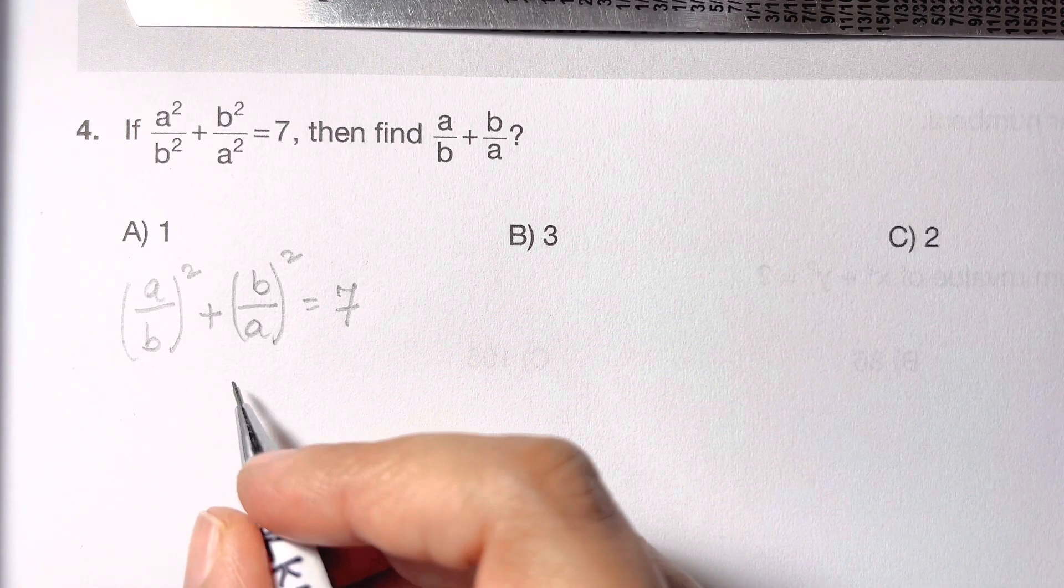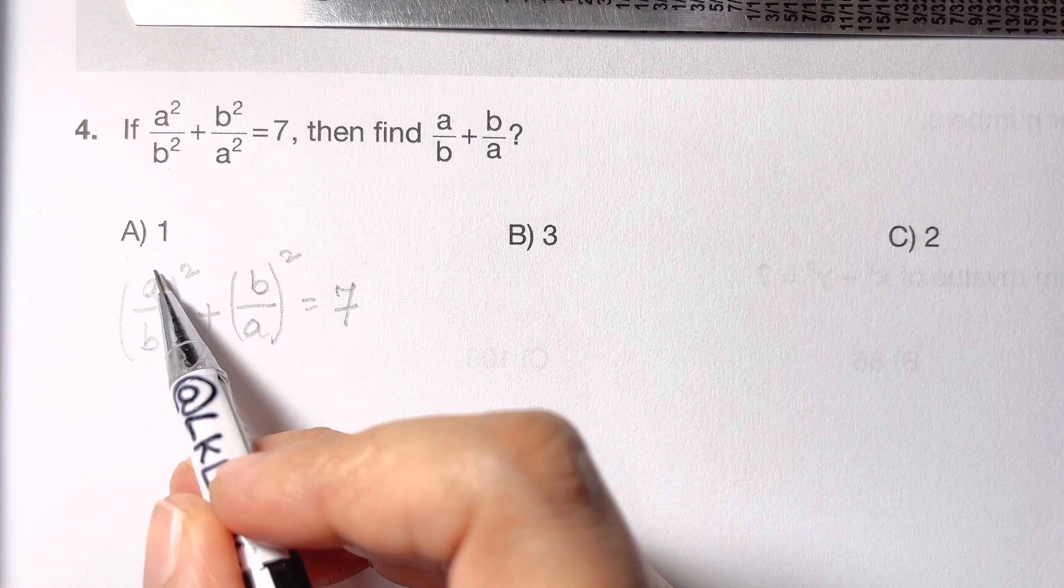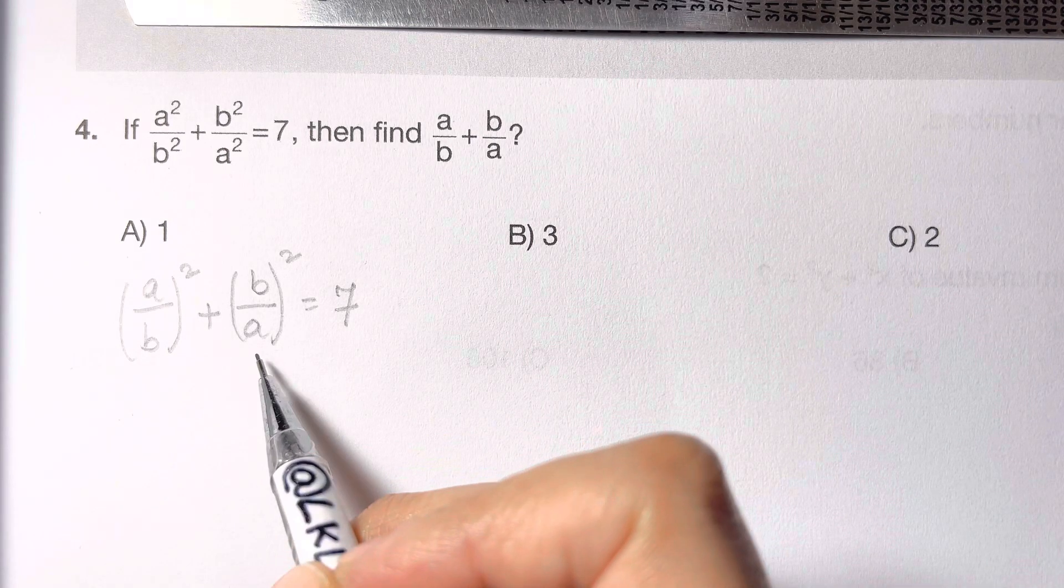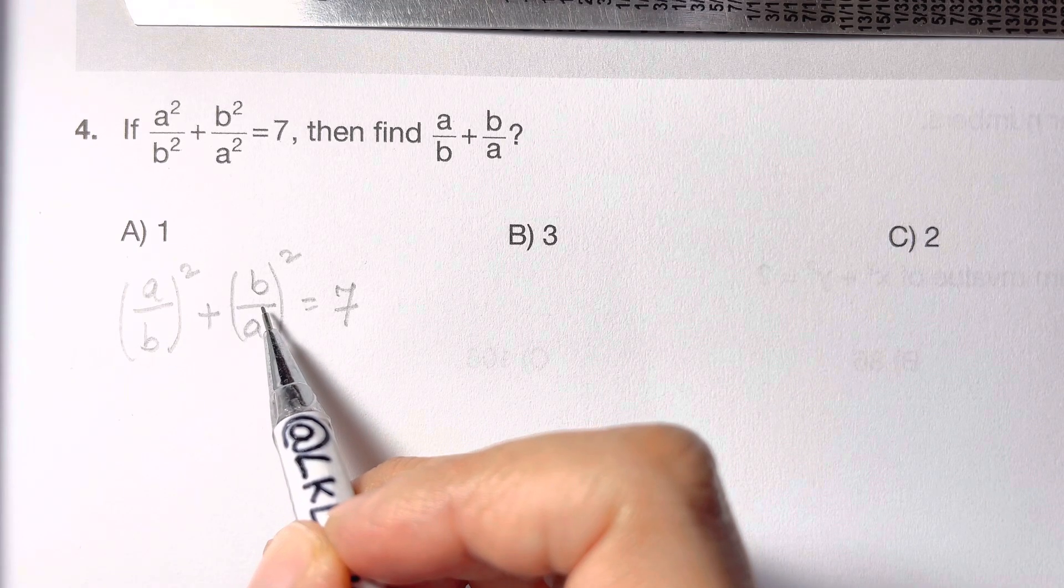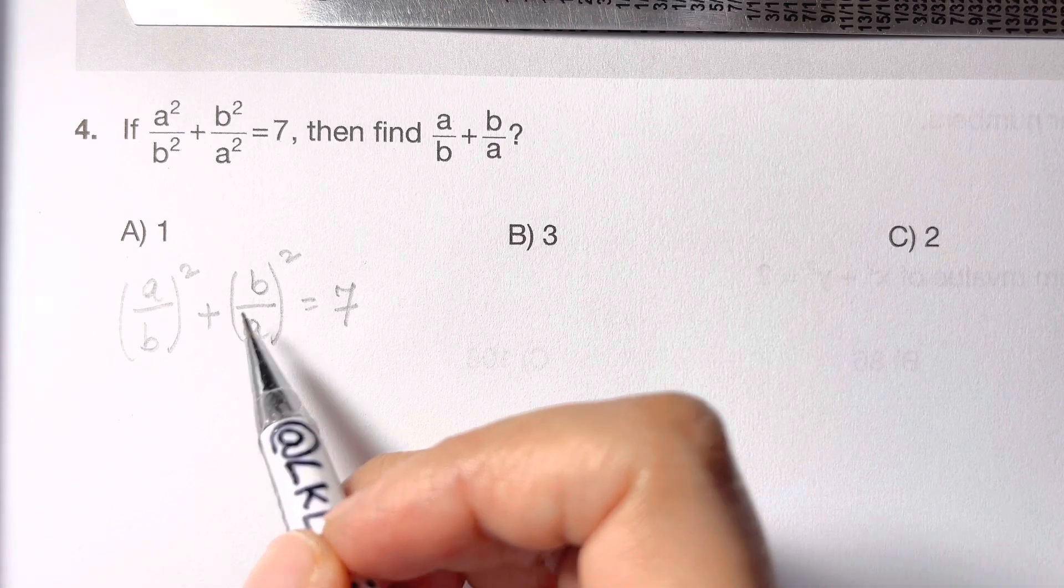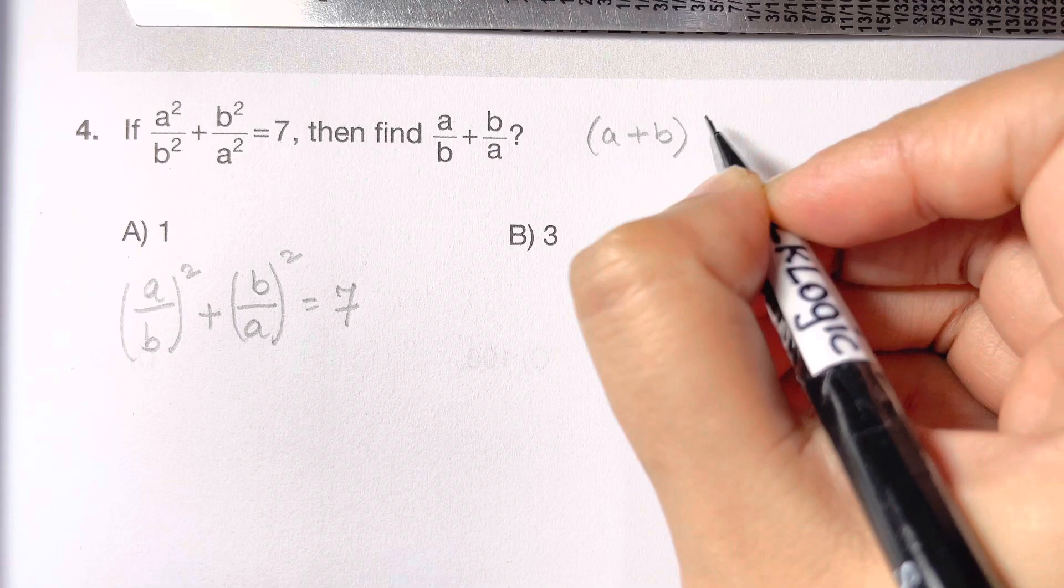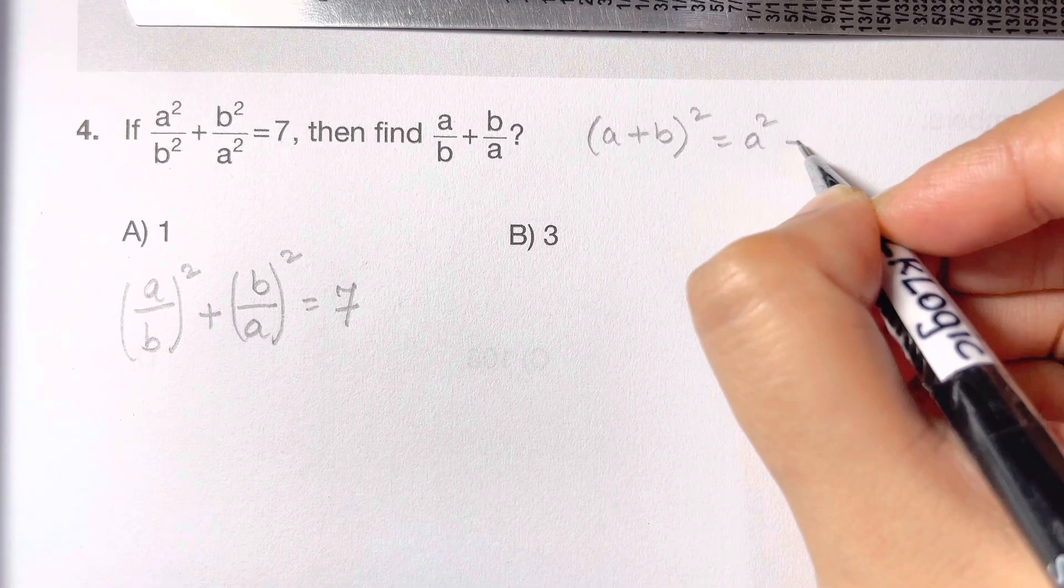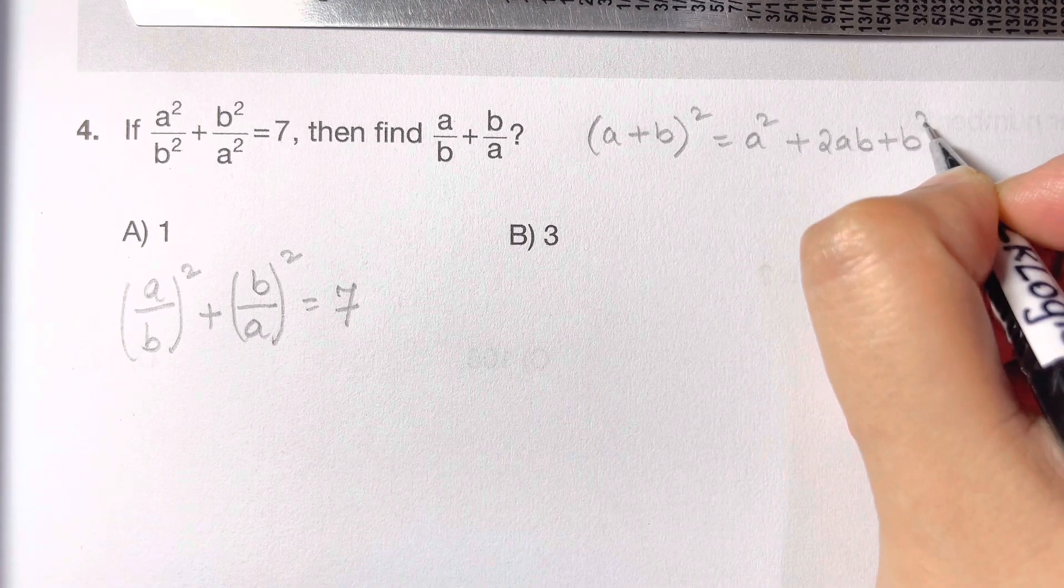Now what do you think? I've got a² plus b². Now if you consider this whole thing as a and this whole thing as b, it's a² plus b². Where can you find a² plus b²? In an identity: (a plus b)² is a² plus 2ab plus b².